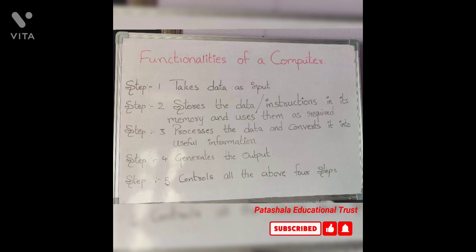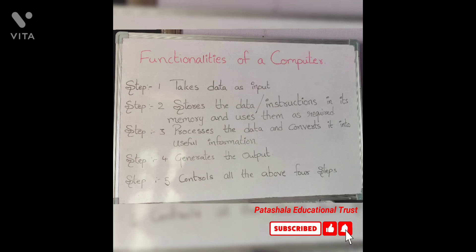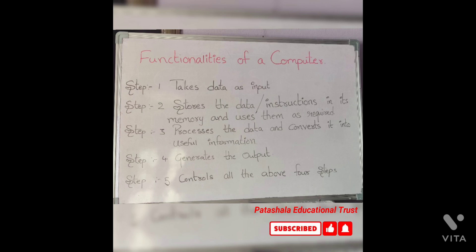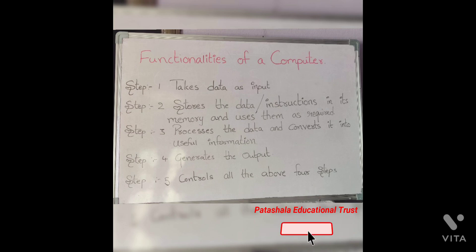In a very broad sense, any digital computer carries out the following steps. Firstly, it takes data as an input. Second, it stores the data and instructions in its memory and uses them as required. In the third step, it processes the data and converts it into useful information. In the fourth step, it generates the output. In the fifth step, it controls all the above four steps.